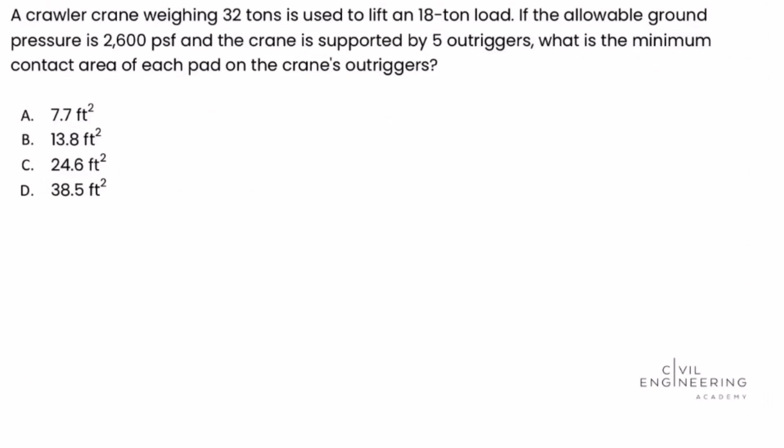A crawler crane weighing 32 tons is used to lift an 18 ton load. If the allowable ground pressure is 2,600 pounds per square foot and the crane is supported by five outriggers, what is the minimum contact area of each pad on the crane's outriggers?